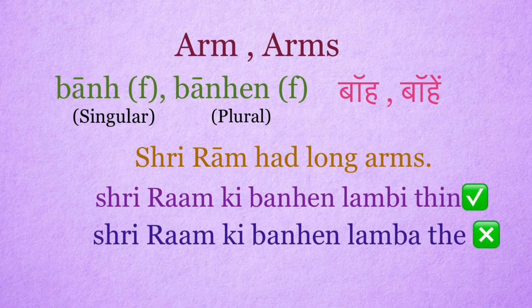Arm: bah. Arms: bahen. It's a feminine word. Shri Ram had long arms. Right sentence: Shri Ram ki bahen lambi thi. Wrong use: Shri Ram ki bahen lambe the, or lamba the.